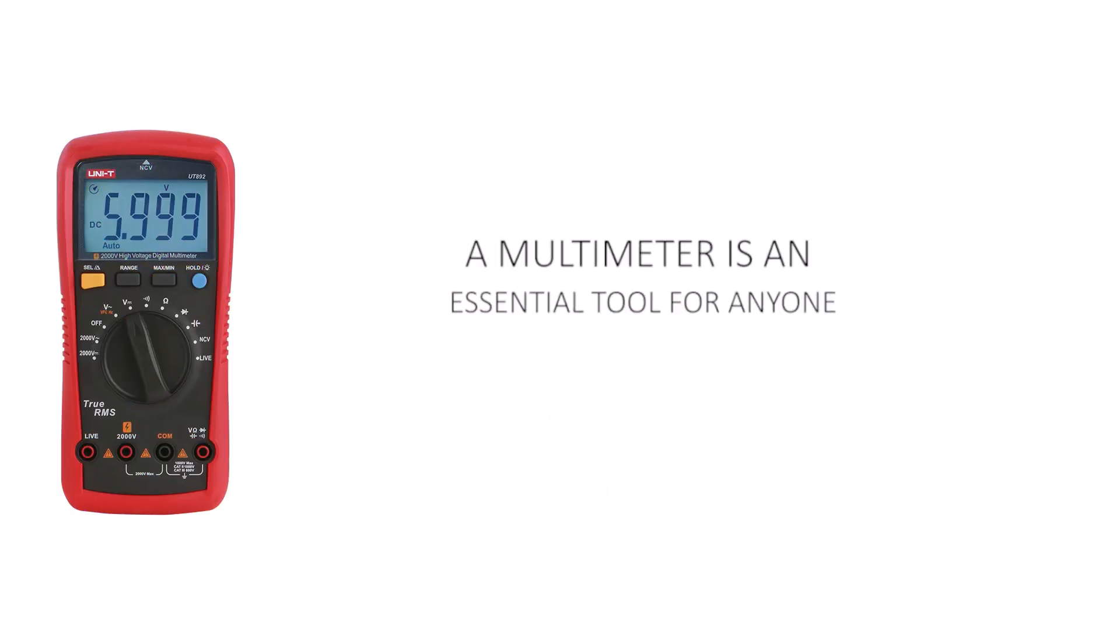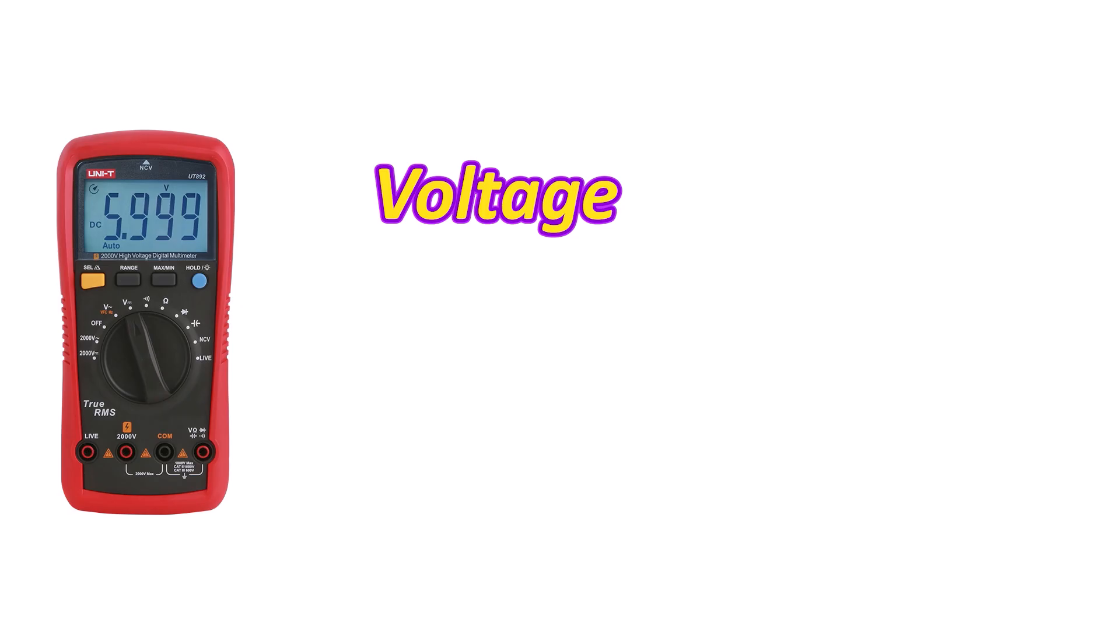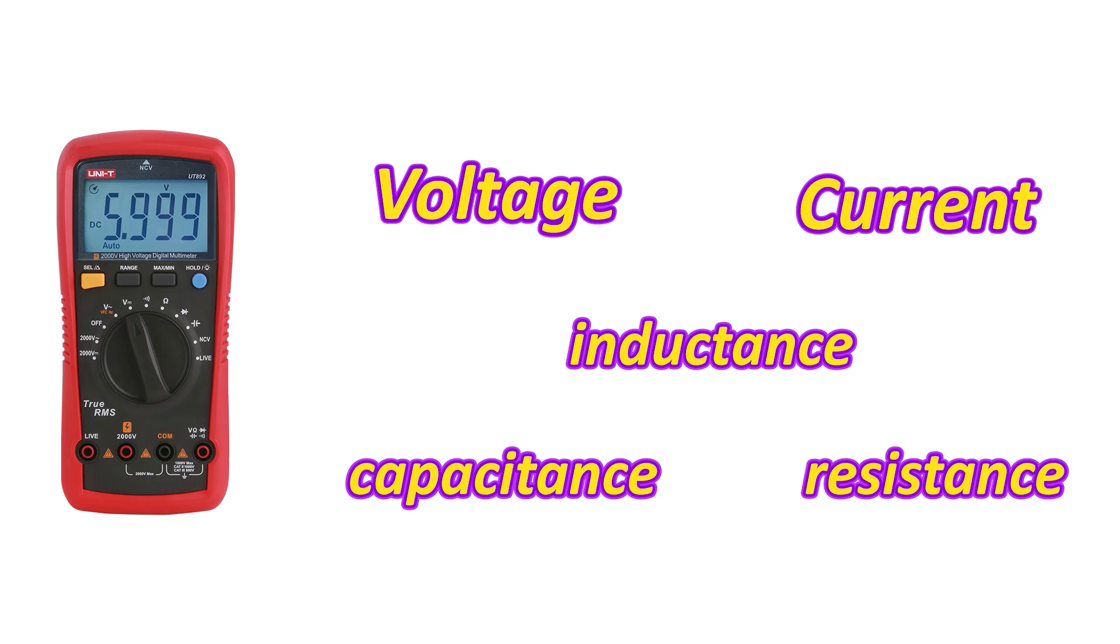First, let's talk about what a multimeter is. A multimeter is an essential tool for anyone working with electronics. It is used to measure various electrical parameters such as voltage, current, resistance, capacitance, and sometimes even inductance.